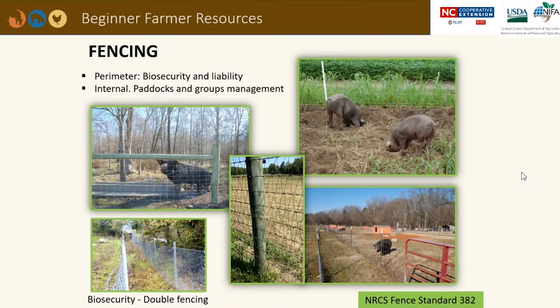Fences need to be able to confine pigs and discourage them from jumping over, digging under, or crawling between the wires. They also need to prevent stray animals and wild pigs from entering the paddock. Traditional non-electric fence such as wooden post and pig or woven wire fence, or barbed wire, can be a little more costly to install but require less maintenance in the long run. Electrical fencing systems are portable, versatile, cheaper, and easier to use to follow the land contour.